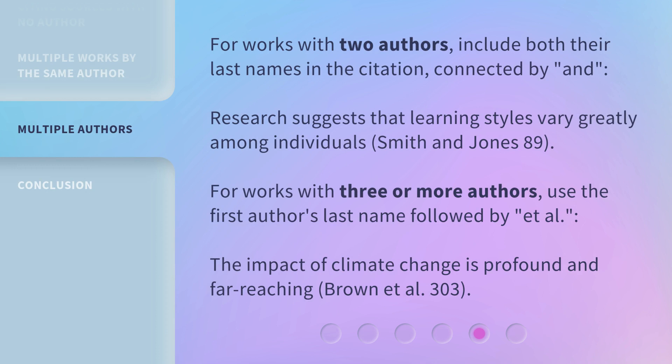For works with two authors, include both their last names in the citation, connected by 'and.' For example: Research suggests that learning styles vary greatly among individuals (Smith and Jones 89). For works with three or more authors, use the first author's last name followed by et al.